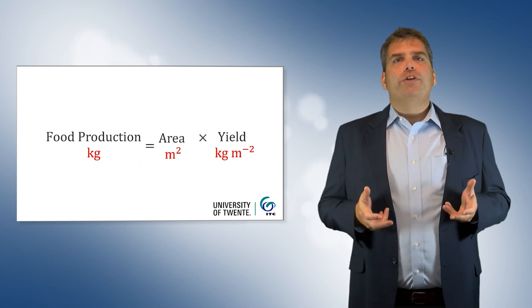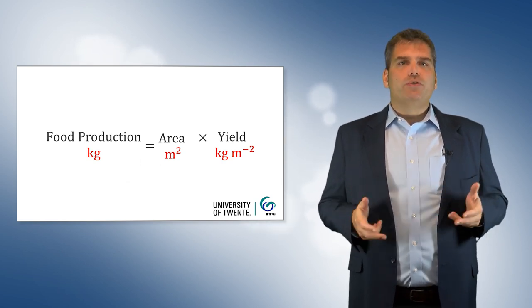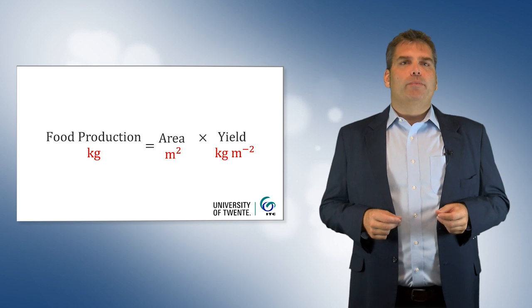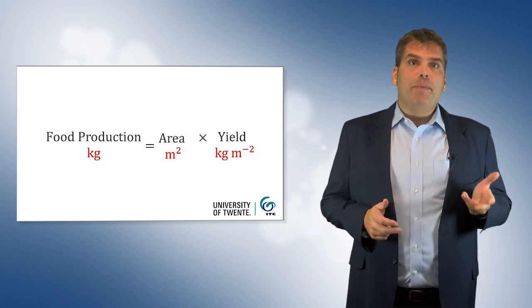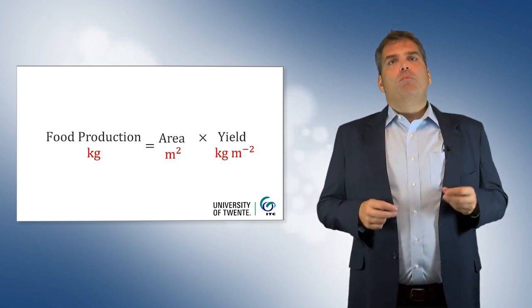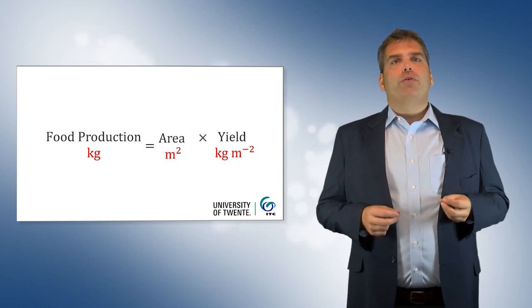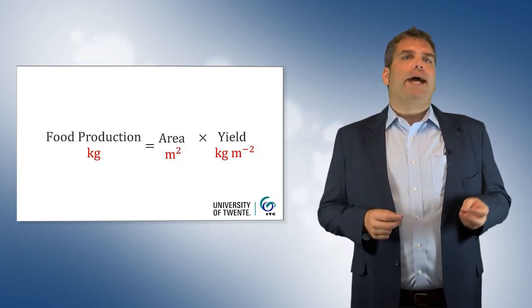For food security analysis, Earth observation is almost exclusively used to estimate food availability, specifically the amount produced. More recent studies have combined these data with socioeconomic data to capture market access.